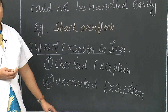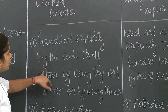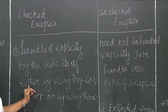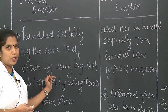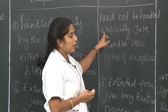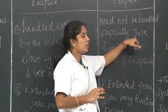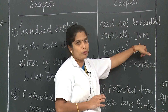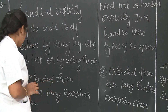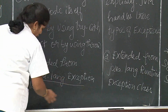There are two types of exceptions in Java: one is a checked exception and another is an unchecked exception. Checked exceptions can be handled explicitly by the code itself, either by using try-catch blocks or by using the throws keyword. For unchecked exceptions, you need not handle them explicitly — the JVM, the Java Virtual Machine, handles these types of exceptions.